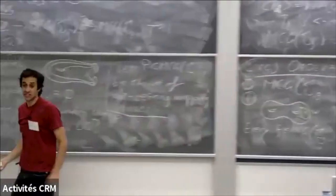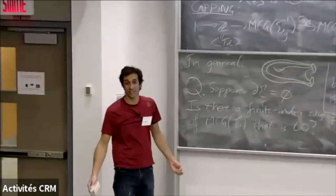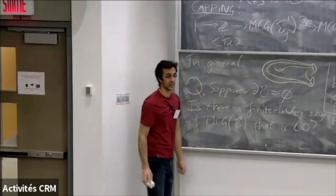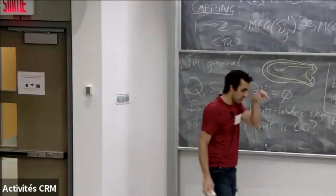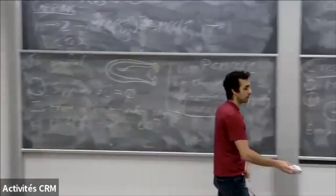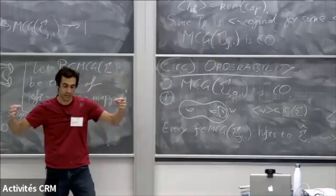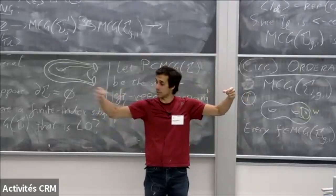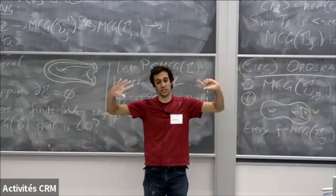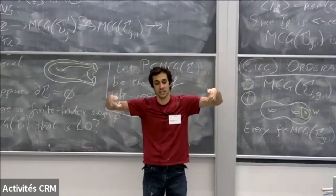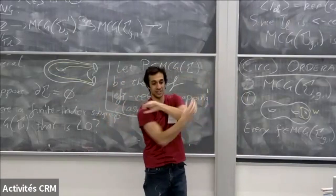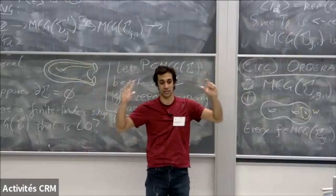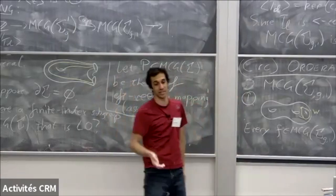That's a little survey about orderability of mapping class groups, at least the finite type ones. What if there's more than one puncture? If you had two punctures, you can line up the surface so you have a puncture on either end, then do a hyperelliptic involution and another involution that switches them — this gives you a dihedral subgroup. So it's not going to be circularly orderable because you get Z₂ × Z₂. You can play similar games for more punctures.